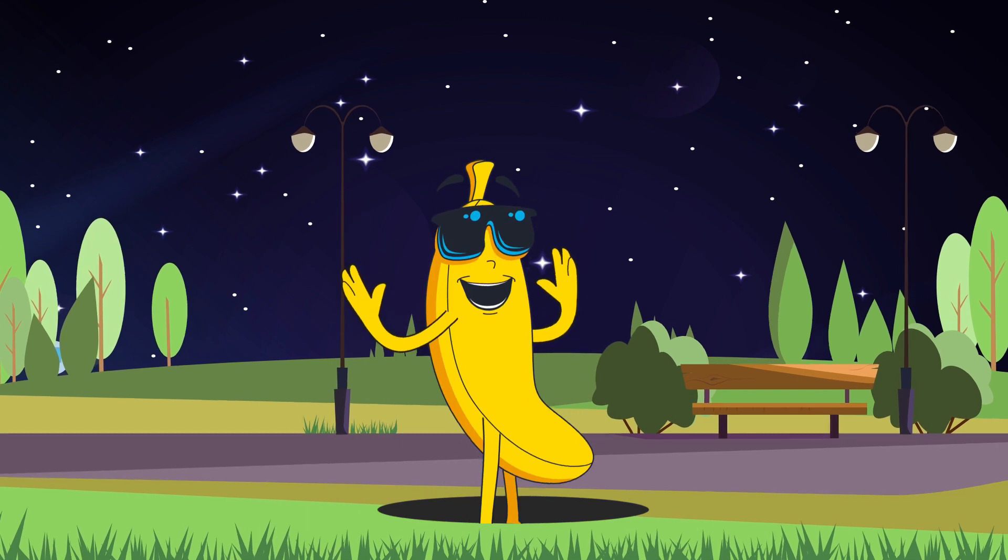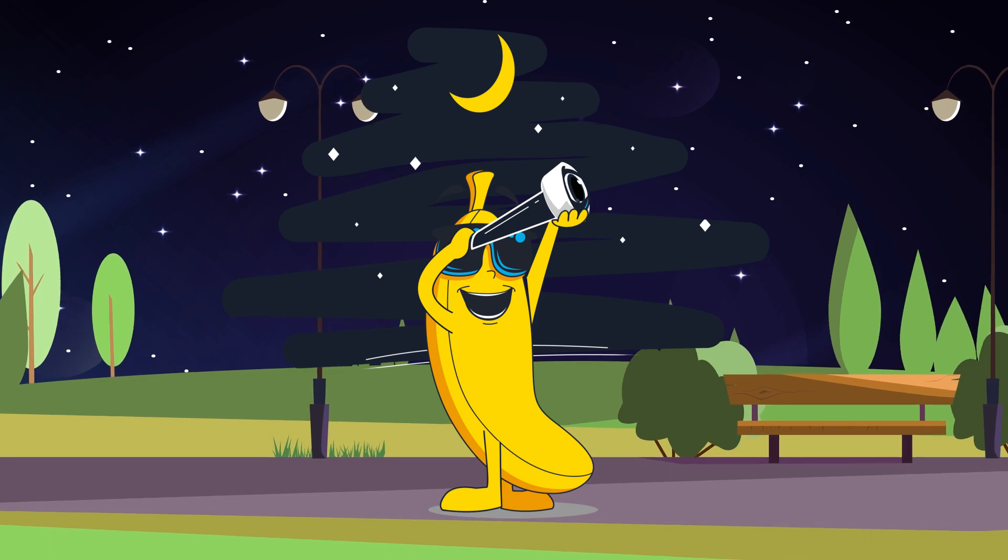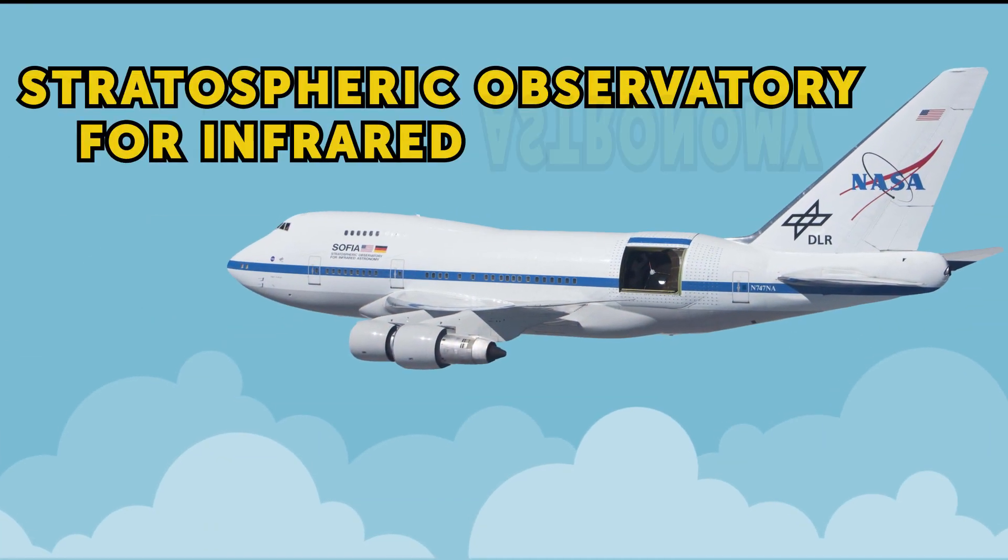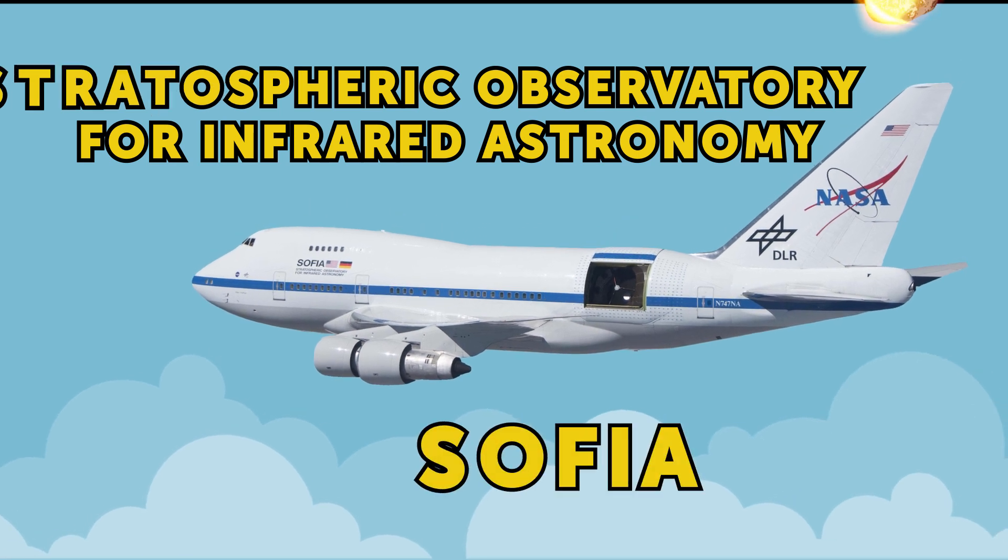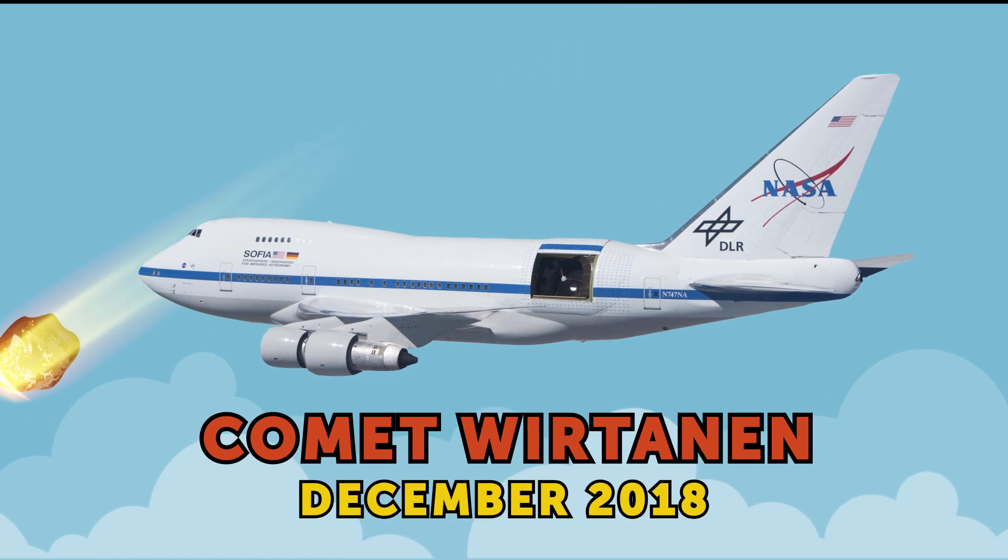But unlike that time, nowadays, our earth has organisms on its surface and some of them managed to build such things like observatories. The world's largest one, which name is the Stratospheric Observatory for Infrared Astronomy, or just SOFIA, observed the comet Wirtanen as it made its closest approach to earth in December 2018.